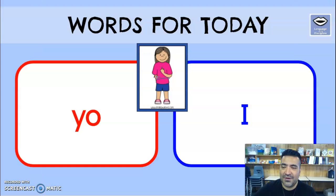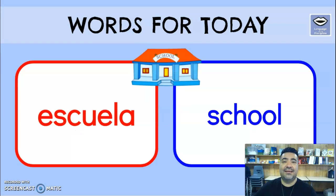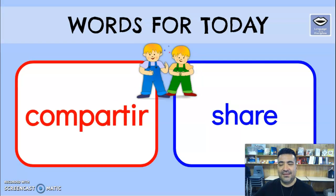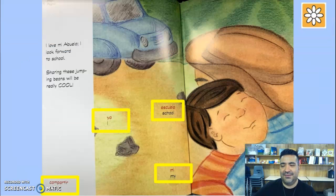There are the words: 'yo' which means 'I,' 'me' which is 'my,' 'escuela' meaning school, and 'compartir.' Say it one more time — 'compartir.'